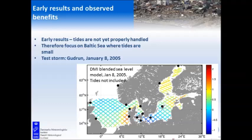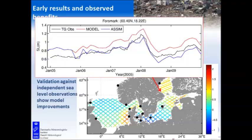We do have data from the Forsmark station in Sweden. This graph shows the observations in black, the model without assimilation in red, and the assimilated model in blue — showing some improvements at the time of the peak of the event especially.